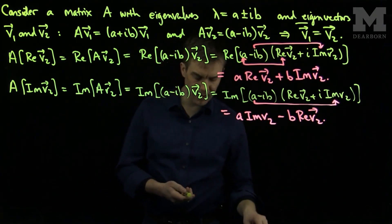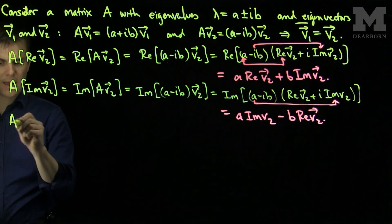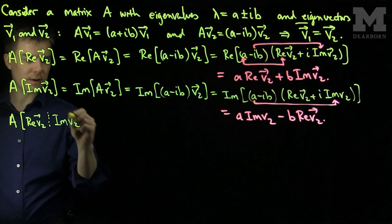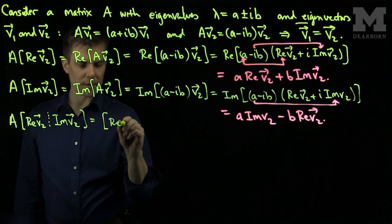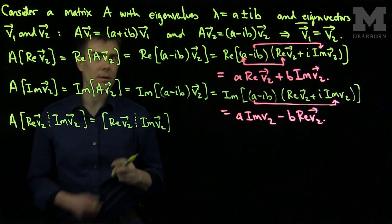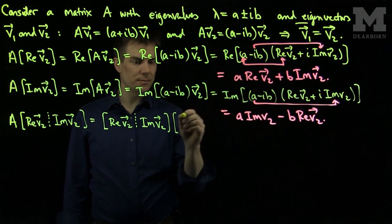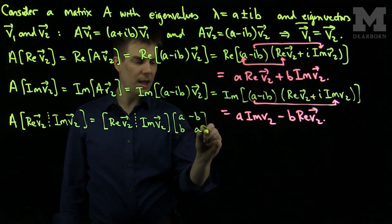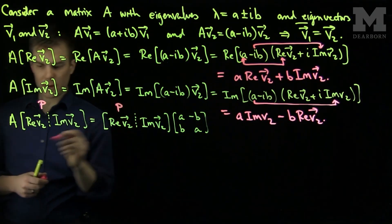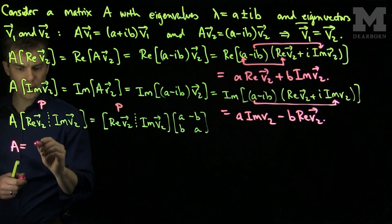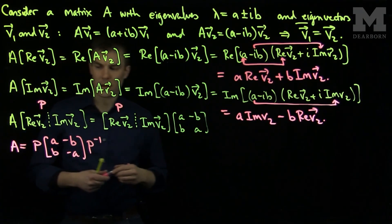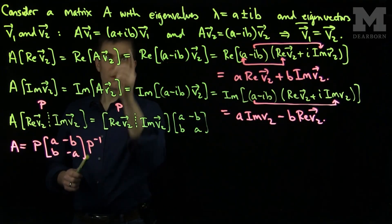Taking these relationships and assembling them in a matrix, we see that A applied to the matrix [Re(v2) | Im(v2)] equals [Re(v2) | Im(v2)] multiplied by the matrix [a, -b; b, a]. Calling this matrix P, we have deduced that A = P·[a, -b; b, a]·P⁻¹. So we have a form of diagonalization for the matrix with complex eigenvalues.